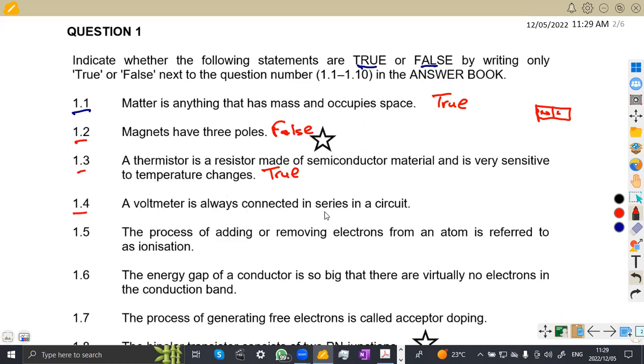A voltmeter is always connected in series. That is 1.4. Is it true that a voltmeter is always connected in series? No. This is false. What is connected in series is the ammeter. When you're measuring current, a voltmeter is connected parallel to the given circuit. So this is actually false.